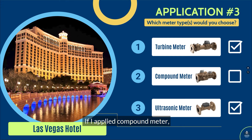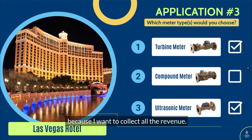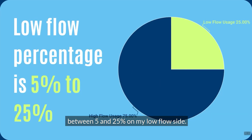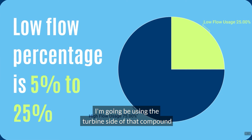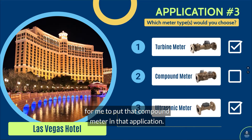If I applied a compound meter, someone might say they want to collect all the revenue — but I'm probably not going to have flows between five and 25% on the low flow side. I'm going to be using the turbine side of that compound probably most of the time. Hence, it doesn't make sense to put a compound meter in that application.